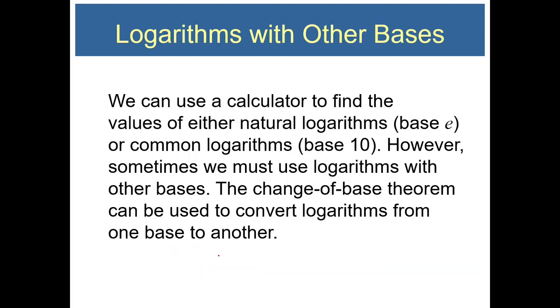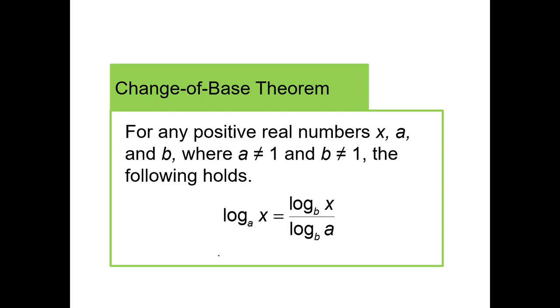We can use a calculator to find values of either natural logarithms, base e, or common logarithms, base 10. However, sometimes we must use logarithms with other bases. The change of base theorem can be used to convert logarithms from one base to another. For any positive real number x, a, and b, where a is not equal to 1 and b not equal to 1, the following holds: log base a of x equals log base b of x divided by log base b of a. If I do not know the log base a of a number, I can change it to base b of any base b that I want. Our calculator uses base 10 and it uses base e. We'll use log for base 10 and we'll use natural log when it's base e.